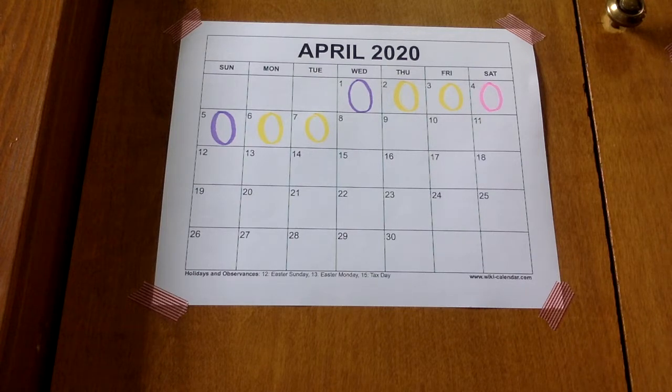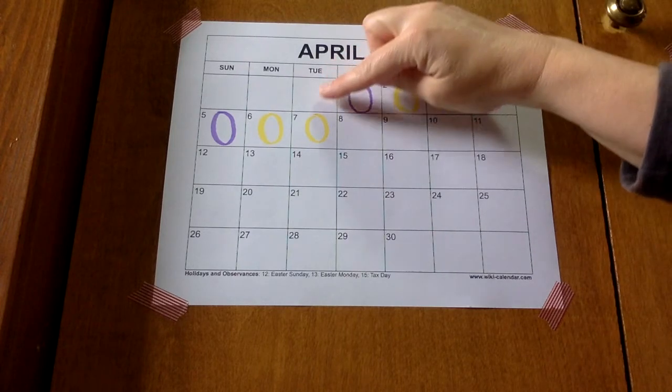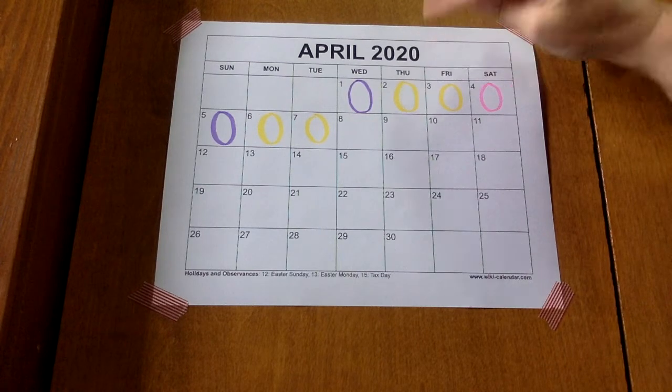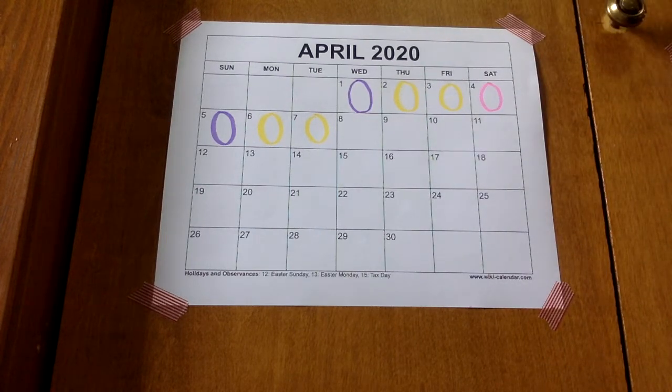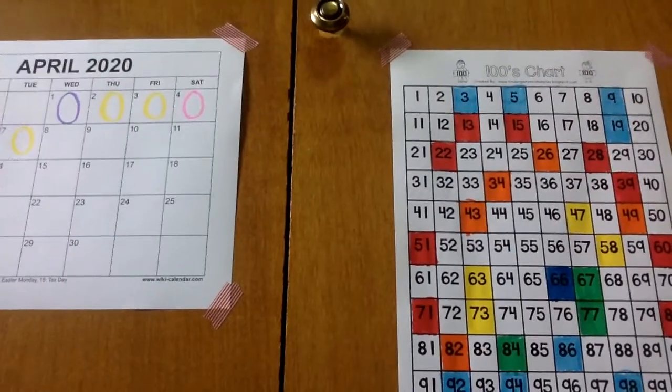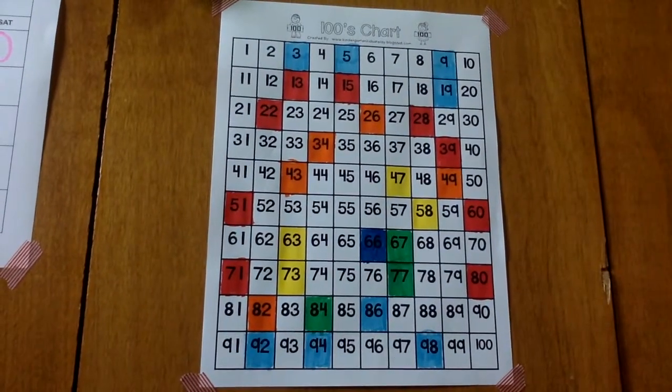Let's read the whole date together. April, Tuesday, the 7th, 2020. Next is our 100 chart. Let's count by ones today on our 100 chart first. Starting at 1.